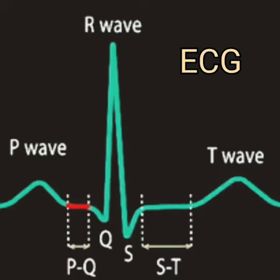The P wave is due to atrial depolarization and represents the speed of impulse from the SA node to the atrial muscles. Its peak represents the invasion of the AV node by the excitation process.